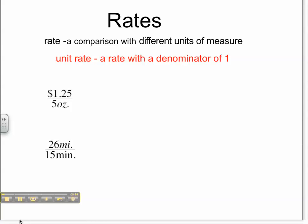So if we want to compare things, for example, for grocery shopping, and we find a can of soup that's $1.25 for 5 ounces, we want to find out how much it costs per ounce. Then we'll take a look at a problem that if we are driving for 26 miles and it takes us 15 minutes, how long is it taking us, or how far are we driving per minute?